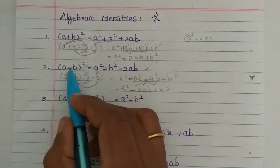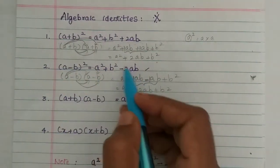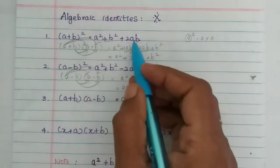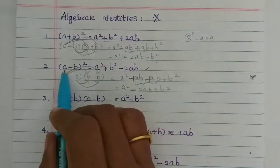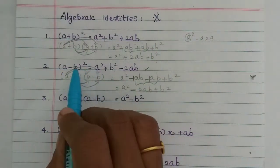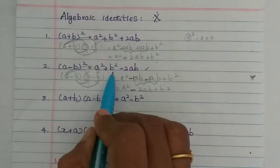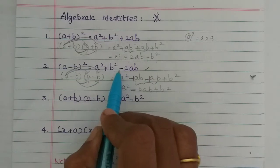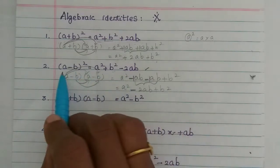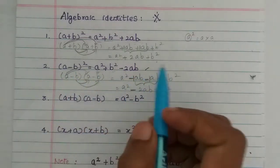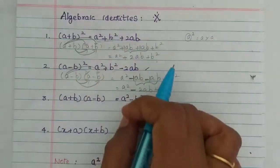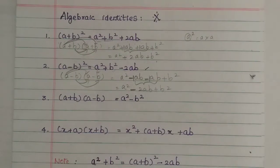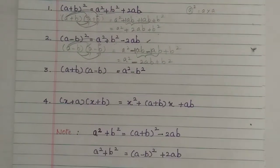So this is a squared plus b squared minus 2ab. That is minus 2ab. The first formula had plus 2ab; this second formula has minus 2ab. So: square of first term plus square of second term minus 2 into first term into second term. This is the a minus b whole squared formula.